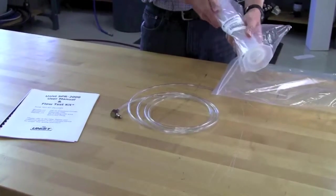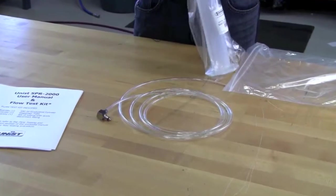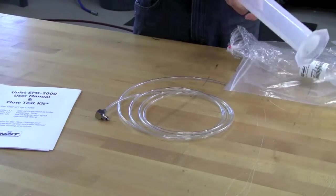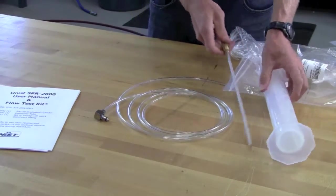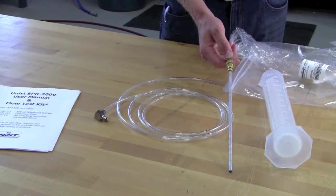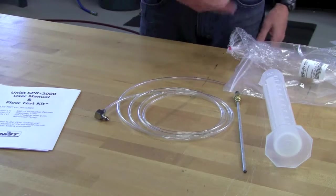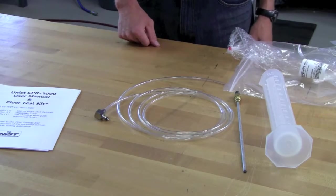We also have a 500 milliliter graduated cylinder. We also include, generally inside that cylinder, a dispenser tube assembly. And this dispenser tube assembly is the same dispenser tube style that's installed in your Uni-Roller system.